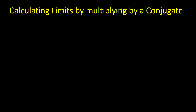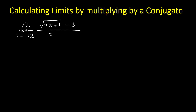In this video we want to learn how we can find limits by multiplying by a conjugate. Suppose we want to find the limit of radical 4x plus 1 minus 3 over x minus 2.